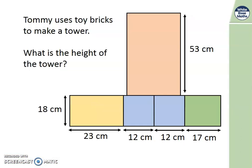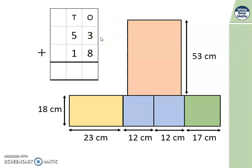Let's learn. Tommy uses toy bricks to make a tower. What is the height of the tower? That means how tall is it? Which numbers on here would we need to use? Height means from top to bottom or from bottom to top. So we will need 18 centimetres and 53. Let's think how to work that out. Pause the video and have a go at using this column method to add those numbers up.